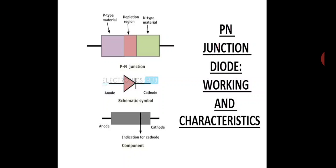Now we discuss the working of the P-N junction diode. The junction diode has two terminals: P-side positive and N-side negative, with the depletion layer in the middle. We use a DC battery, and the connection of the DC battery between P and N sides can be done in two ways — we can connect the P-side to positive or negative and the N-side to positive or negative.